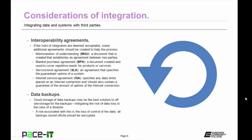Then you need to consider the interoperability agreements. If the risks of integration are deemed acceptable, some additional agreements should be created. There should be a memorandum of understanding — a document that establishes an agreement between two parties. Another document is a blanket purchase agreement, used to cover repetitive needs for products or services. There should be a service level agreement, or SLA, which specifies the guaranteed uptime of a system. Finally, there may be the need for an internet service agreement, which specifies any data limits and guarantees the uptime of the internet connection.